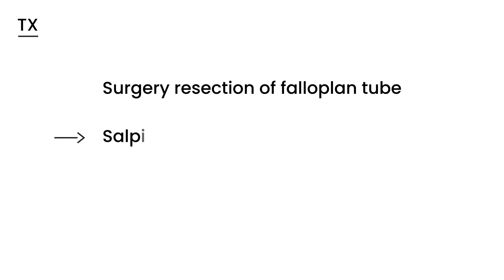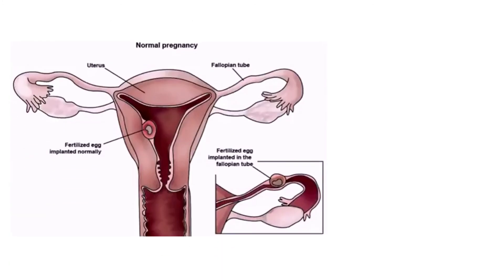How do you treat an ectopic pregnancy? There are two main approaches. The first is surgery — specifically, resection of the fallopian tube, which has a special name: salpingectomy. This simply means cutting out that portion of the fallopian tube where the ectopic pregnancy is located.